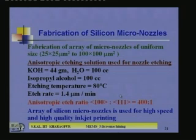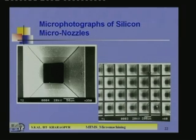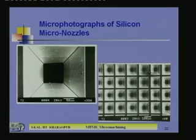The (111) plane is not etched, so only the (100) direction etches, creating slanted surfaces. An array of silicon micro nozzles is used for high-speed, high-quality inkjet printing. The SEM photomicrograph of a single nozzle fabricated in the laboratory shows a hole size of approximately 50 micron × 50 micron. The array of holes is also applicable in dispensers such as perfume dispensers.